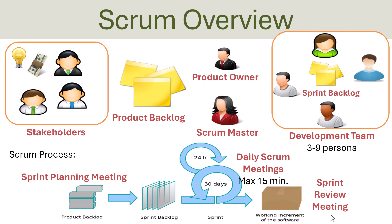Here you see an overview of the different parts of Scrum. The main part is the development team — the actual developers building the product or software. Then you have the product owner, typically a person from the customer company who keeps track of the project in general. The Scrum master is part of the development team and acts as a kind of informal project manager. And then you have different stakeholders — persons with interests in the product being created, such as customers or other types of stakeholders.